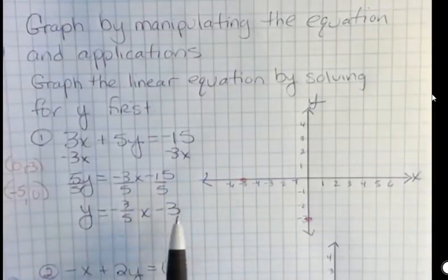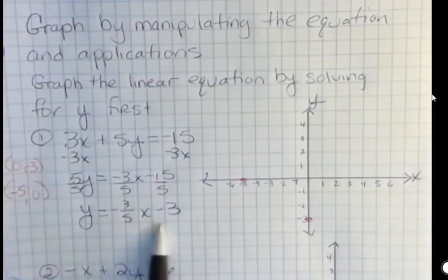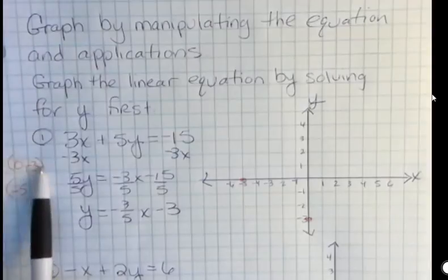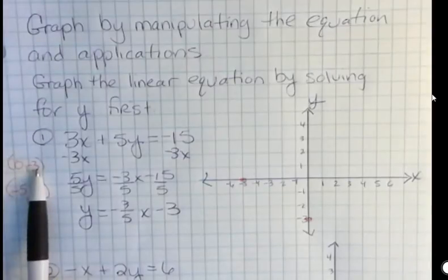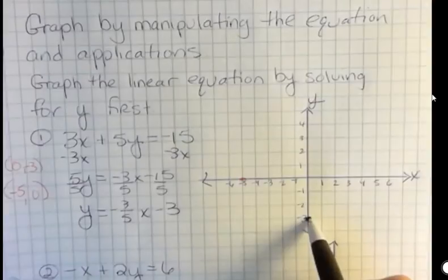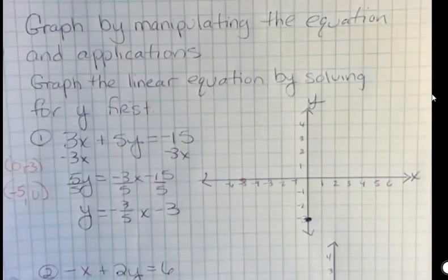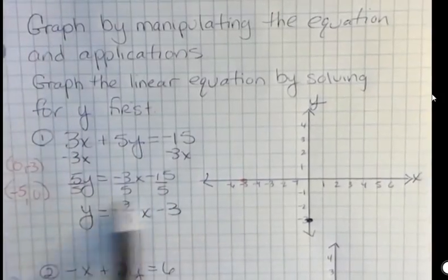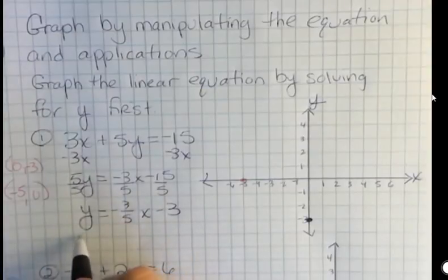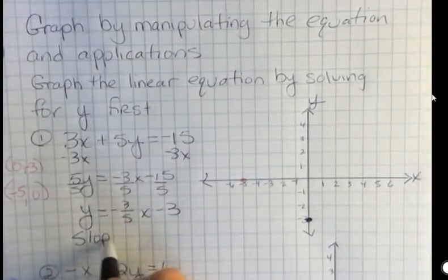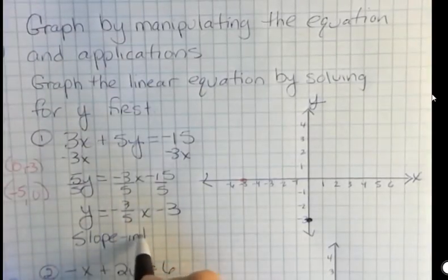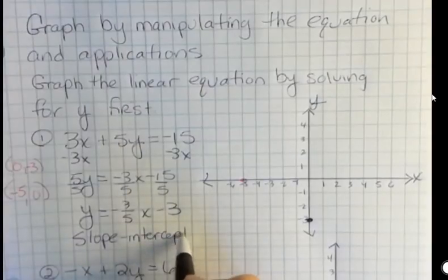That minus 3 is important because that tells us the y-intercept right here. We knew that that was the y-intercept because we already found it. So we would have found that point y equals negative 3 right there. Now, why are they having you do this? In lessons coming up, I'm going to show you how to use an equation in this format. And this is slope intercept form.